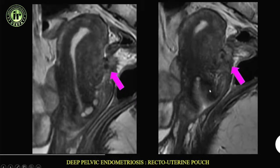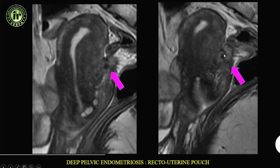Here you can see a hypointense area in the torus uterinus — the junction of the uterine body and cervix — which is the most common site for deep pelvic endometriotic deposits. When reporting these cases, carefully examine the sagittal view for ill-defined areas with speculations, or loss of fat plane between the rectum and uterus, which is suggestive of deep pelvic deposits.